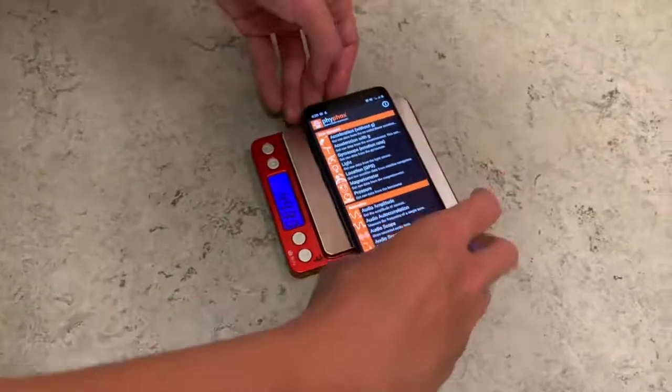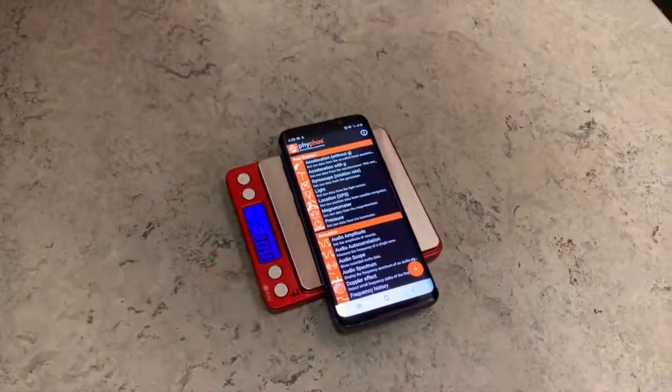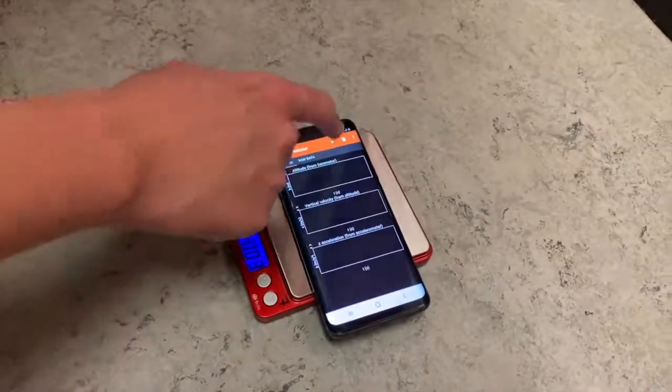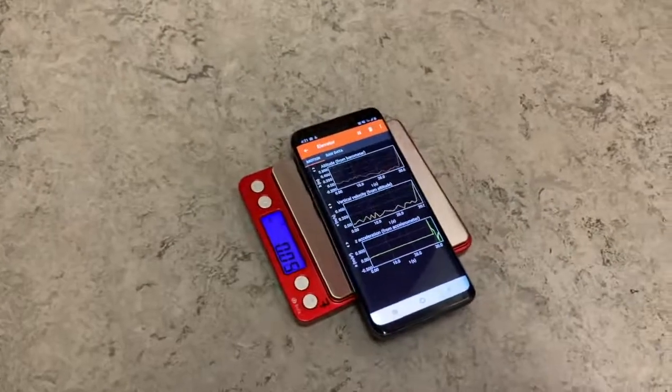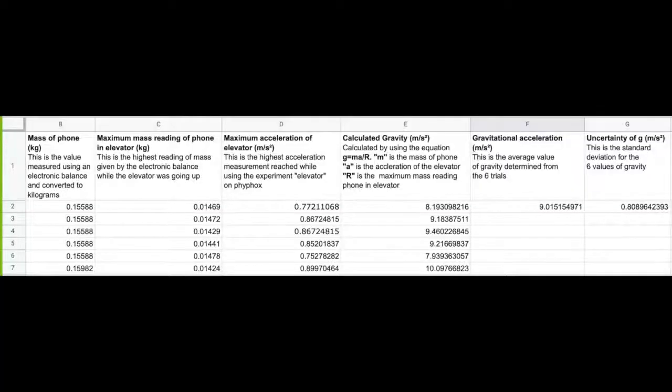To conduct the experiment, place a phone on the scale in the elevator. Then tell the scale to the mass of the device. Let the elevator move upwards. Record the maximum value shown on the scale, and transfer it to the spreadsheet. Repeat the same procedure six times. Record the data collected and use standard deviation to calculate uncertainty.